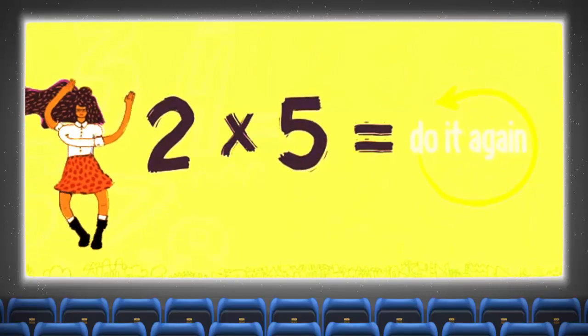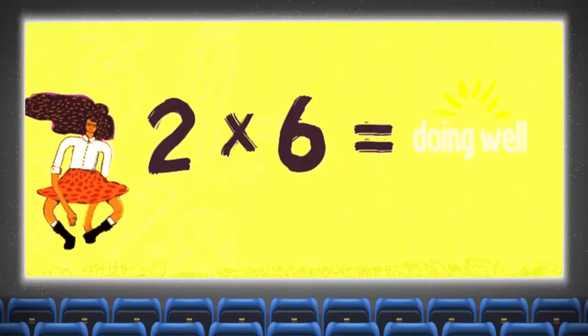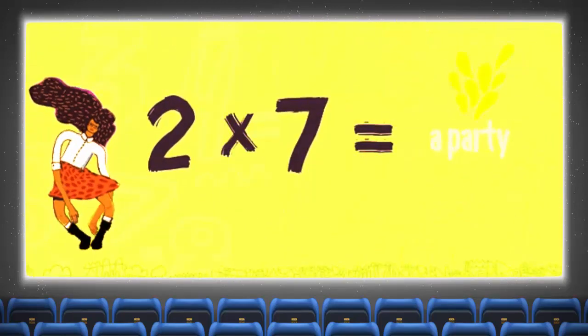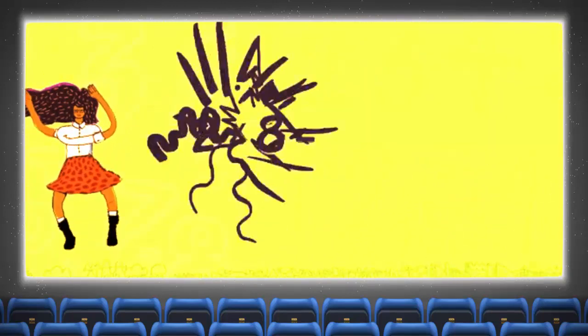Two times six is doing well, two times six is twelve. Two times seven is a party, two times seven is fourteen.